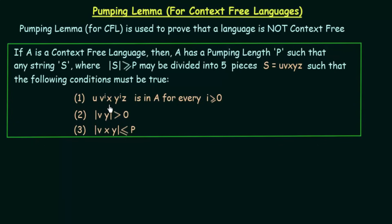The first condition: U V^i X Y^i Z is in A for every i greater than or equal to 0. So you have divided S into U, V, X, Y, and Z, and if you raise V to the power i and Y to the power i, where i is greater than or equal to 0, the resulting string should also belong to language A. The second condition: the length of V and Y should be greater than 0. The third condition: the length of V, X, and Y should be less than or equal to P, the pumping length.